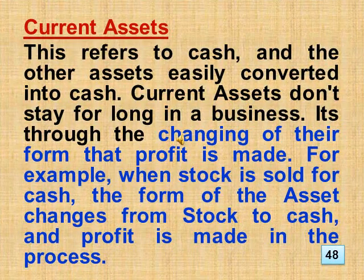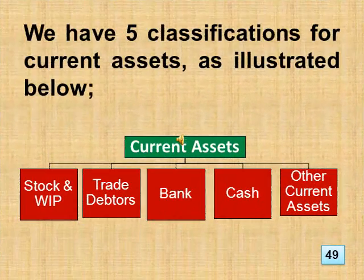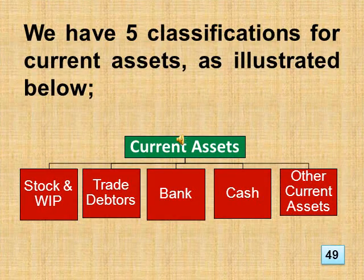Current assets refers to cash and other assets easily converted into cash. Current assets don't stay for long in a business; it's through the changing of their form that profit is made. For example, when stock is sold for cash, the form of the asset changes from stock to cash, and profit is made in the process. We have five classifications for current assets: stock and work in progress, trade debtors, bank, cash, and other current assets.